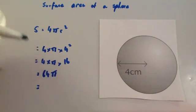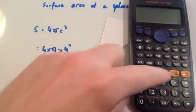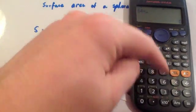64π cm squared. Remember surface area, so it's cm squared. So in your calculator, just do 64 times π.